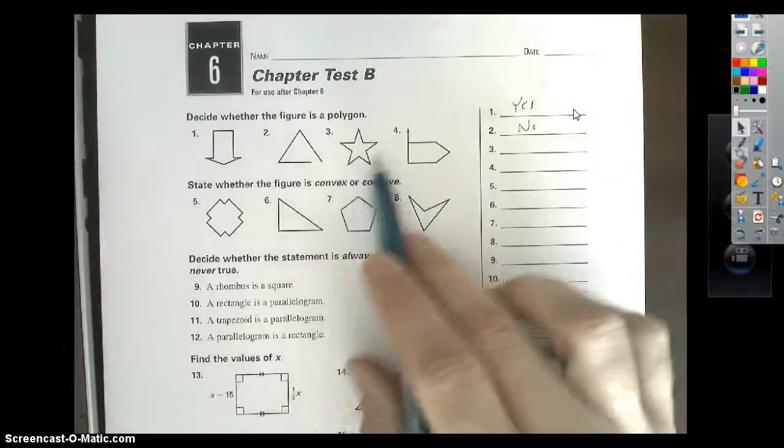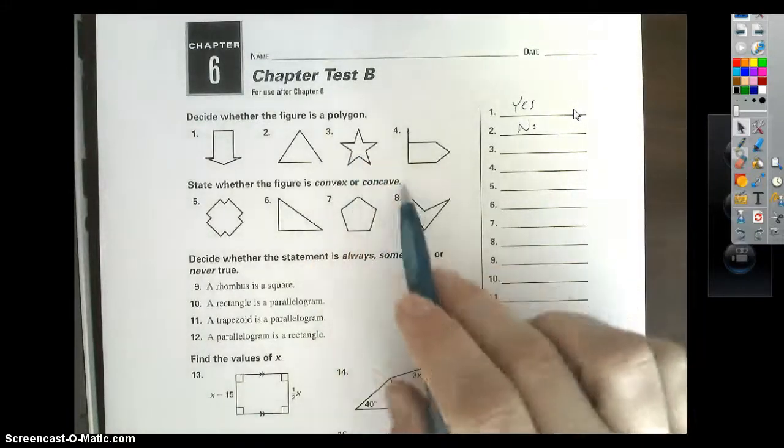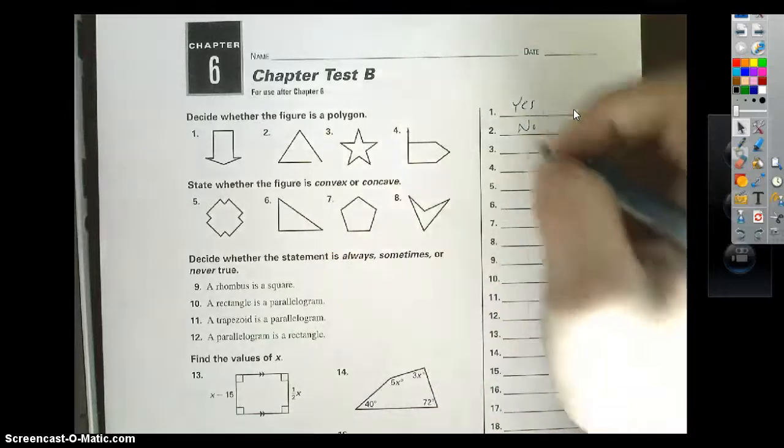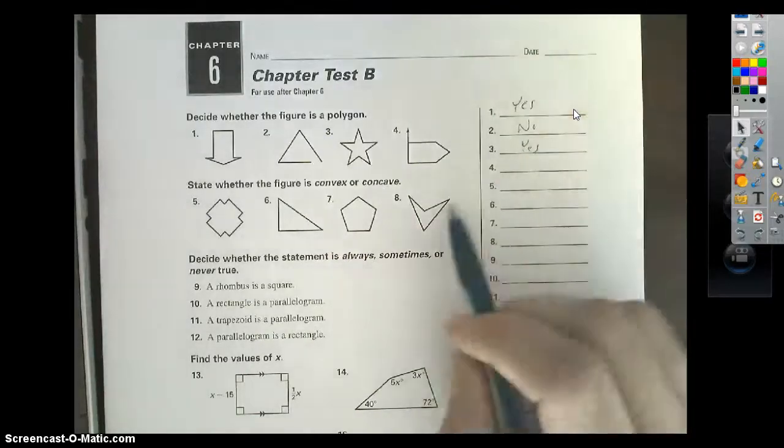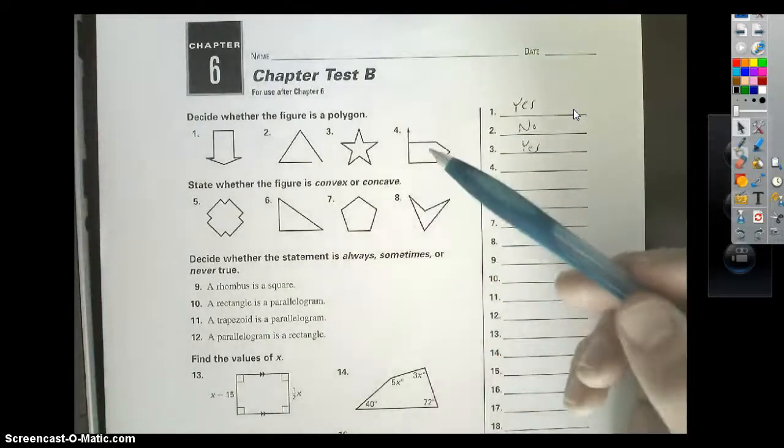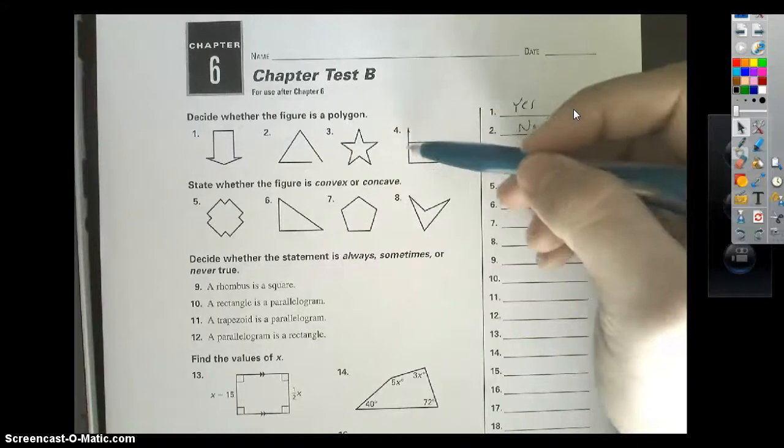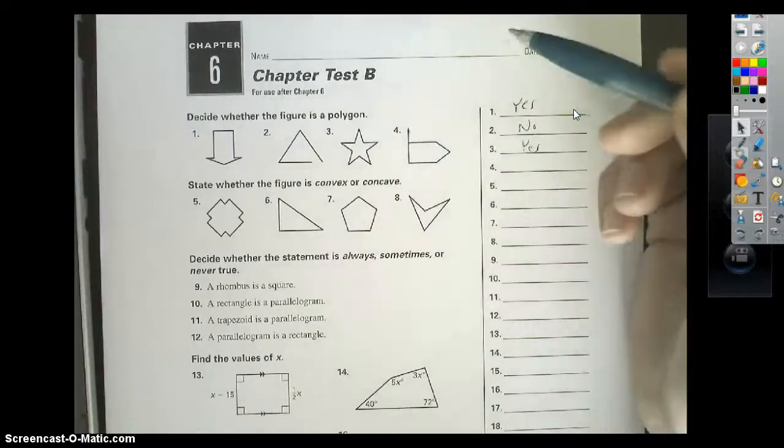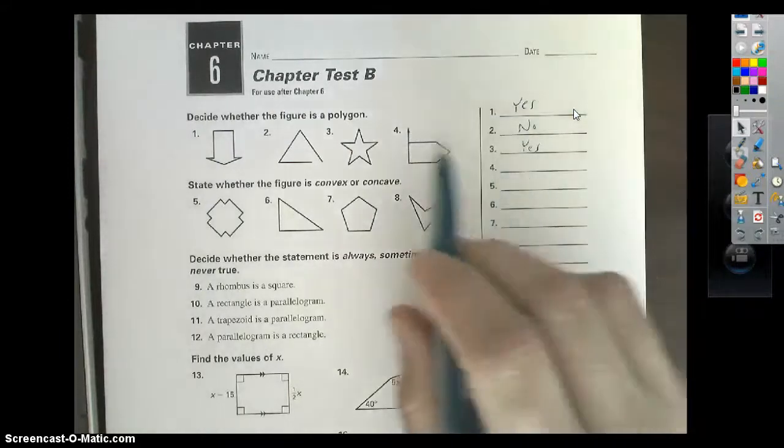Number 3, all right, this is a polygon, all straight sides. It's closing off. Your figure is closed, so that's going to be a yes. Now, number 4, we didn't talk a whole lot about this in class, but you'll notice that you have this extra ray here taking place.